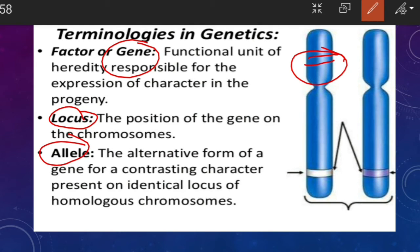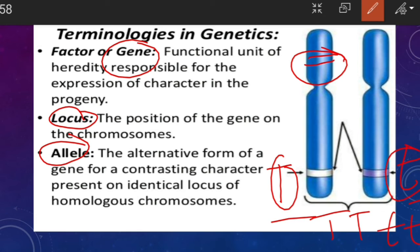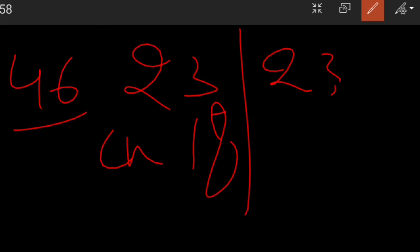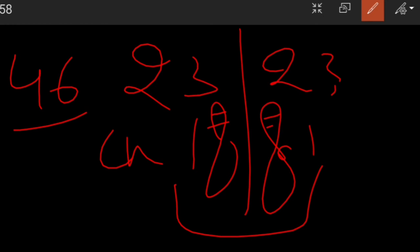Next, what are alleles? Alleles are two different forms of contrasting characters. For example, if we consider the gene for height, one allele can be capital T (tall) and the other small t (dwarf). These can be identical alleles — TT or tt — or different alleles, Tt. These two alleles are present on homologous chromosomes. Out of the 46 total chromosomes, 23 come from one parent and 23 from the other; chromosome 1 from one set carries one allele and chromosome 1 from the other set carries the corresponding allele — these pairs are known as homologous chromosomes.